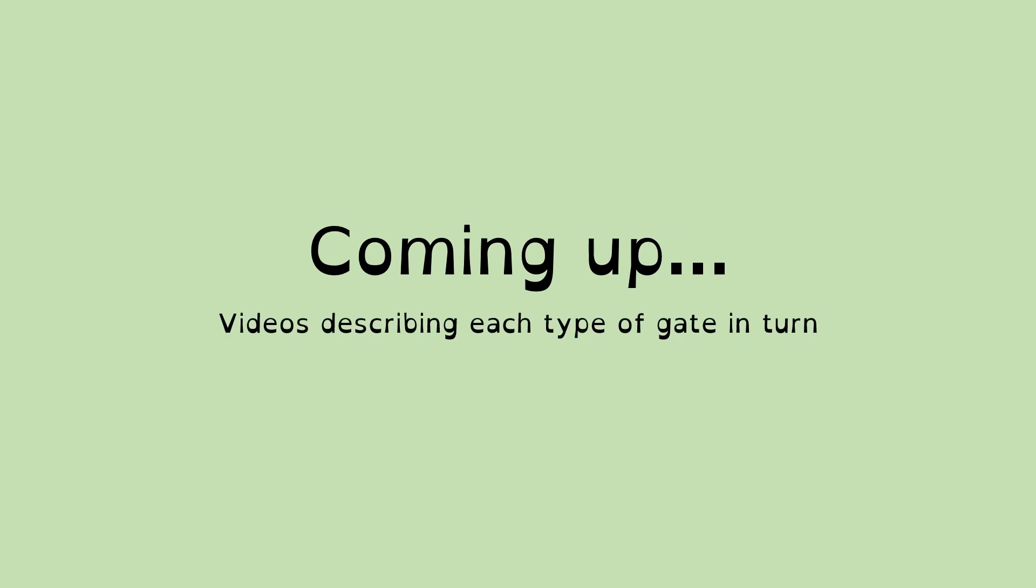So going on from here, the next few videos in this series are going to be looking at each type of gate. Back at that picture that I showed you, all the different types of gates, or most of them. We'll be going through them in turn with hopefully a clear description of what each gate does. And then moving into the next series after that, we'll be looking at how to combine them together to make more complex processing. But that's it from me for now.